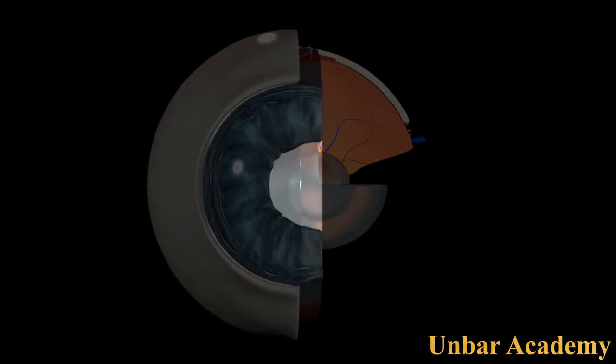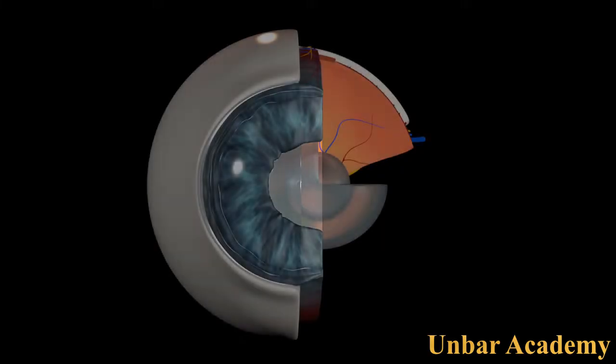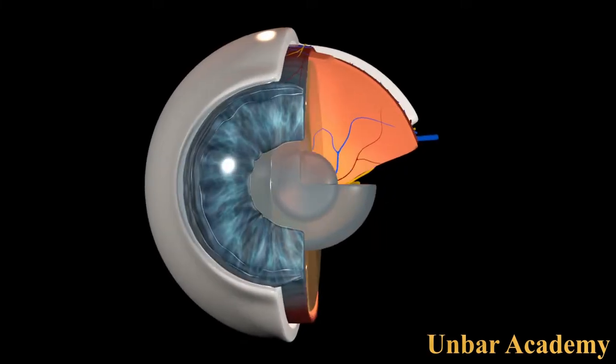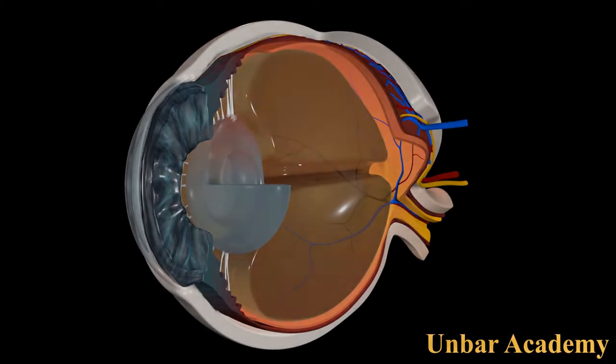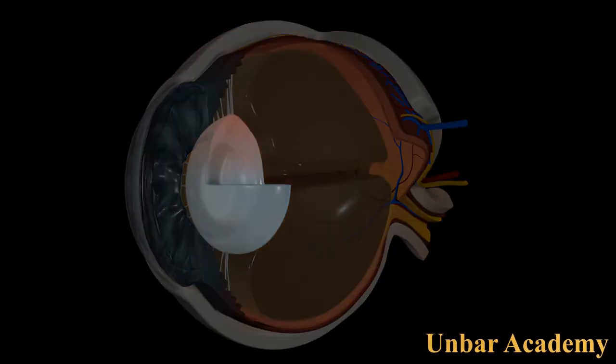But the brain will correct this. For vision to be clear, the image has to be formed directly on the retina.